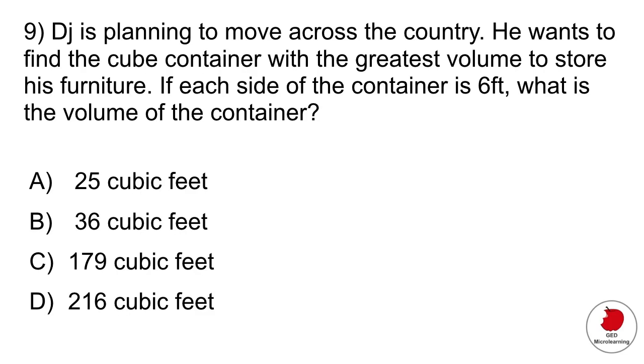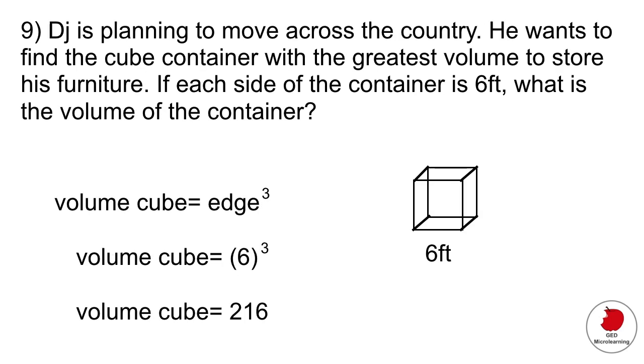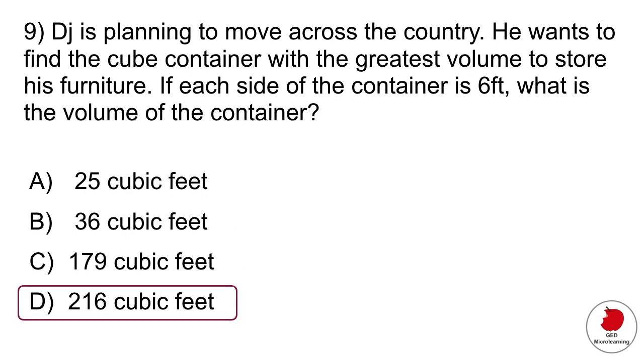Question nine is a geometry question and it says DJ is planning to move across the country. He wants to find the cube container with the greatest volume to store his furniture. If each side of the container is six feet what is the volume of the container? So he has a cube they're telling us which is six feet on one side. So what you would do is use the equation for the volume of the cube which is the edge raised to the third power. In this case the edge or the side is six feet. So you would multiply six times six times six or six cubed and that gives you 216 which is option D.